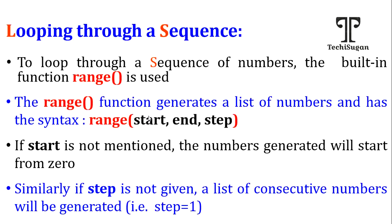The start value begins at zero whenever it is not given; when given, it starts from that particular value. The end value terminates at end minus one — if the end value is given as five, it terminates at position four and doesn't go to five. The step value determines how many steps to take for each iteration. Let us have a simple example.